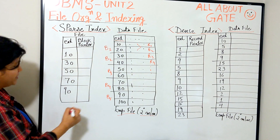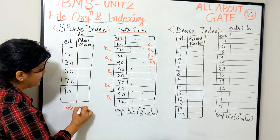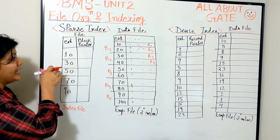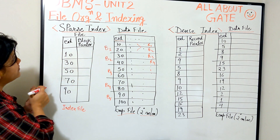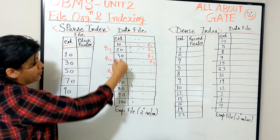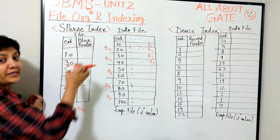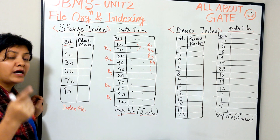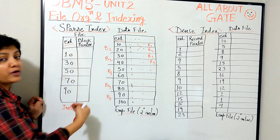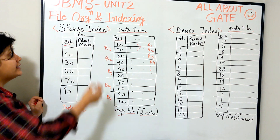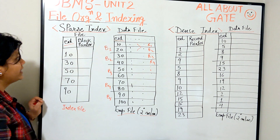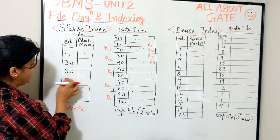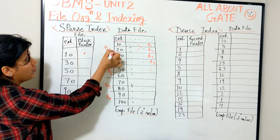Here is my index file. Making an index file means putting up some field of your data file with block pointers or reference pointers so that you can easily access the file. In this index file I'm going to store the employee ID. Since all employee IDs are sorted, I need to store just the block pointer. An index file where the data field is stored along with a block pointer, and it has a minimum number of entries compared to the data file, is known as a sparse index file. I have taken just the first record value of each block: 10, 30, 50, 70, and 90.